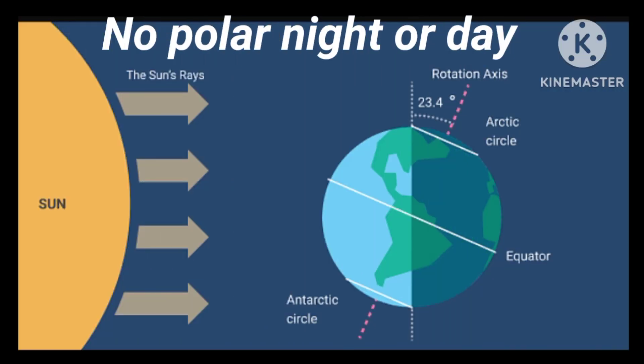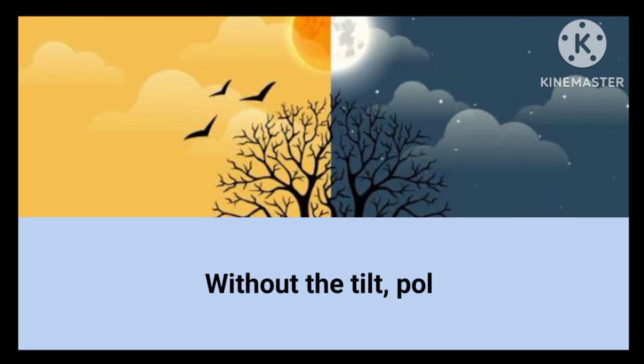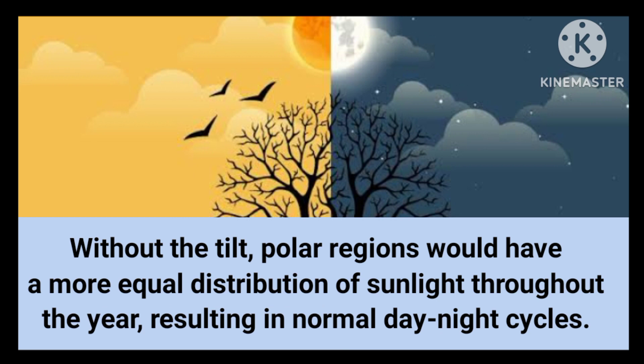Currently, the tilt of the Earth causes polar regions to experience long periods of daylight or darkness, known as the polar day and night. Without the tilt, polar regions would have a more equal distribution of sunlight throughout the year, resulting in normal day-night cycles.